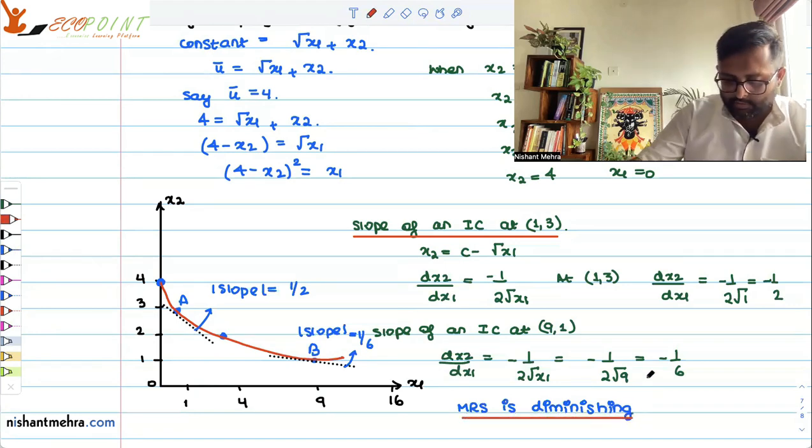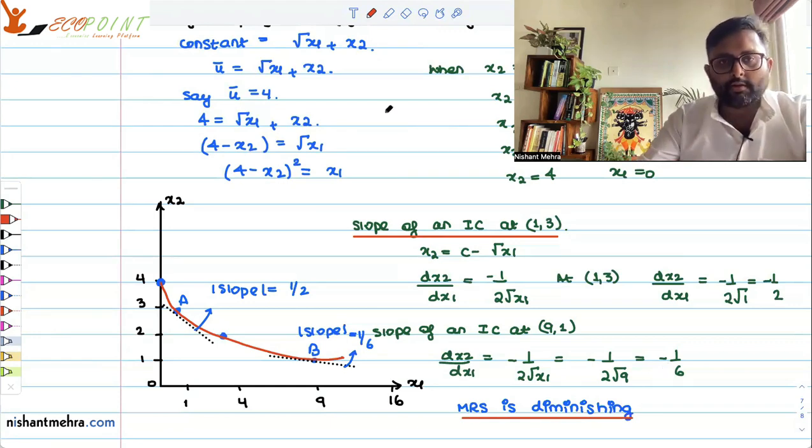You with me? So if the MRS is diminishing, it means that your indifference curves are convex. Indifference curves are convex.